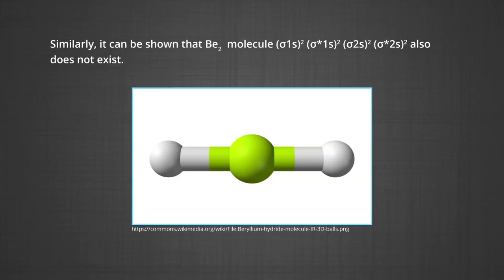Similarly, it can be shown that the beryllium molecule with electronic configuration σ1s², σ*1s², σ2s², σ*2s² also does not exist, because when we calculate the bond order it comes out to be zero.